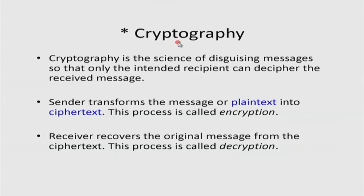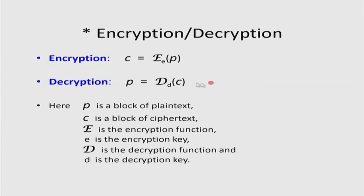Cryptography is the science of disguising messages so that only the intended recipient can decipher the received message. The sender transforms the plaintext into ciphertext — a process referred to as encryption — and the reverse process of converting ciphertext back to plaintext is referred to as decryption. You can think of encryption as a function: you apply the encryption function on the plaintext with a key e and get the ciphertext. At the receiver side, you apply the decryption function with decryption key d and get back the plaintext.